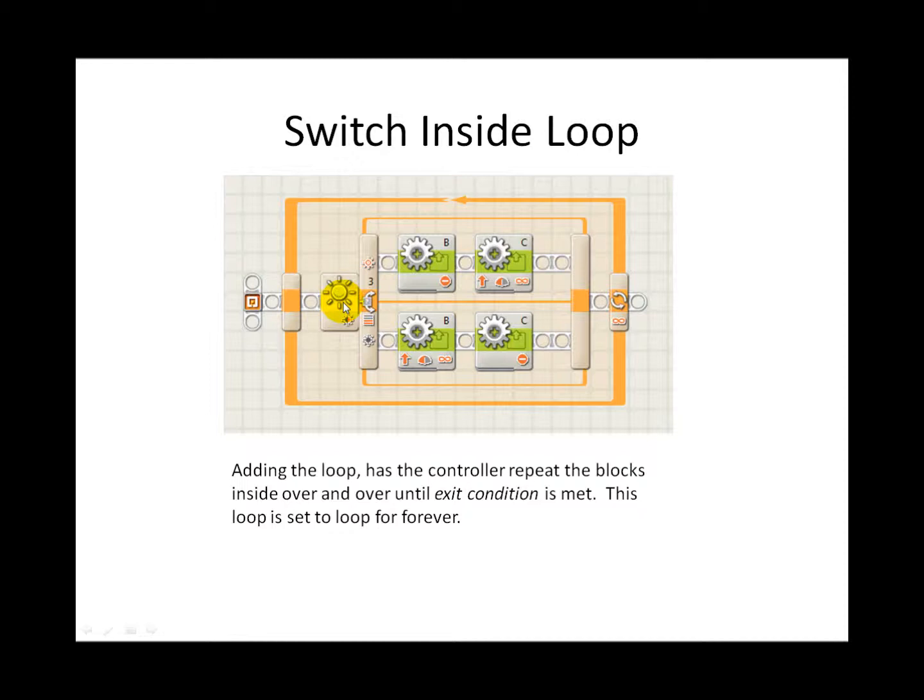It checks the light sensor value. If it is over something dark, say less than 50, B will keep going and C will turn off, causing the robot to turn towards C.